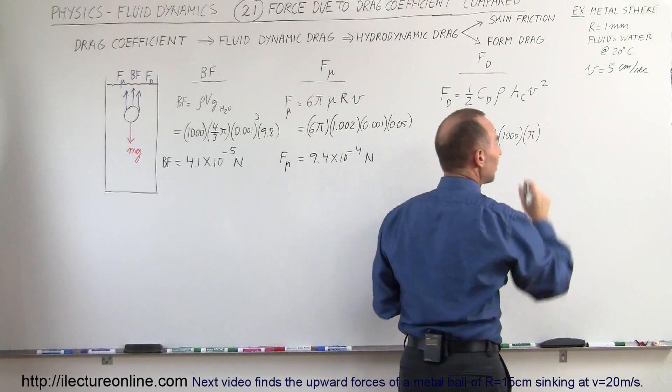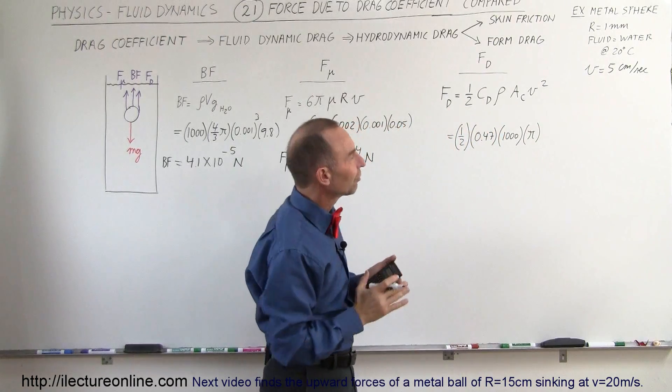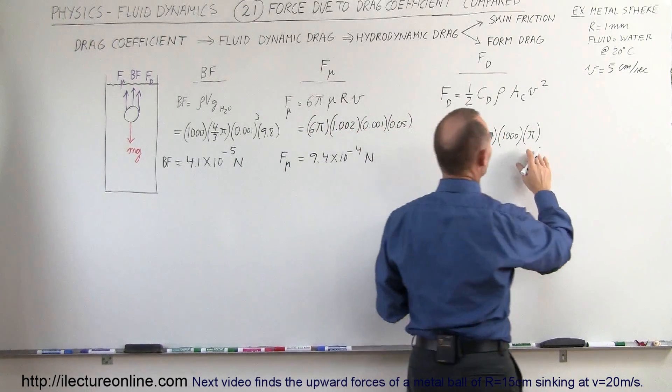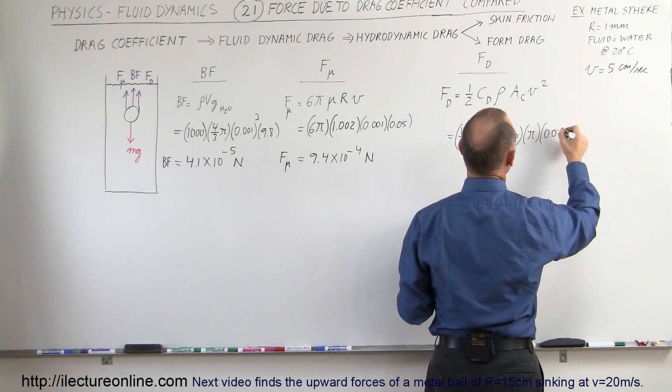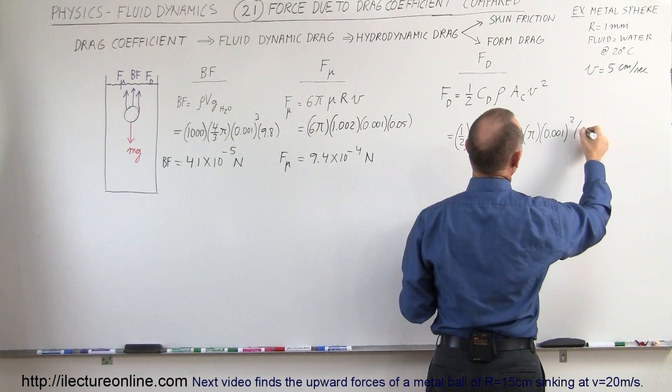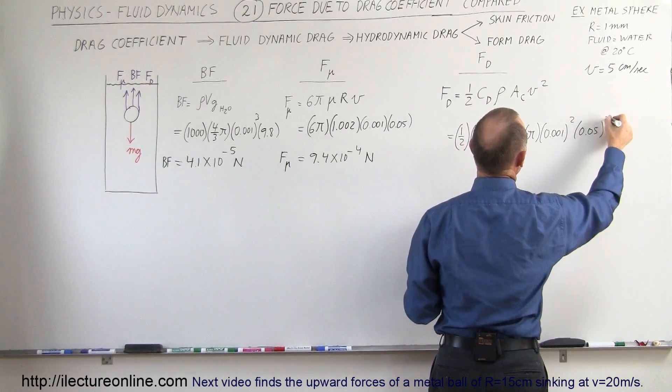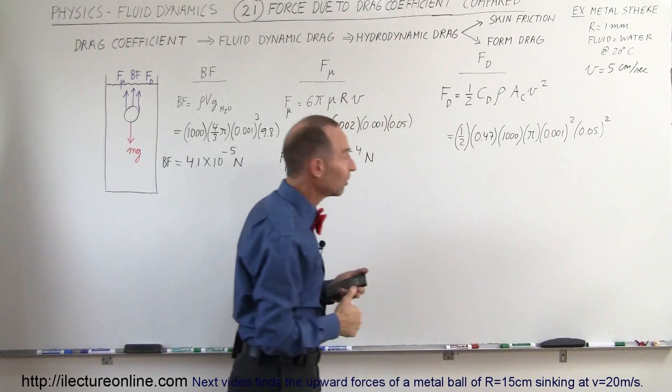The cross-sectional area, since it's a sphere, would be the cross-section of the sphere, which is actually a circle, so it's π r squared, which would be 0.001 squared. And the velocity 0.05 quantity squared.